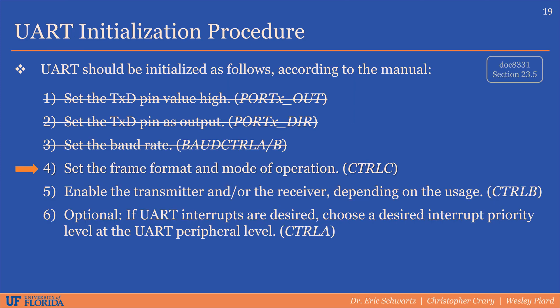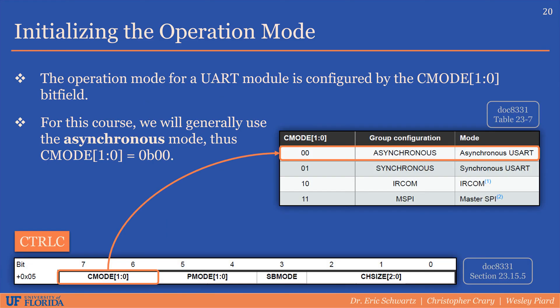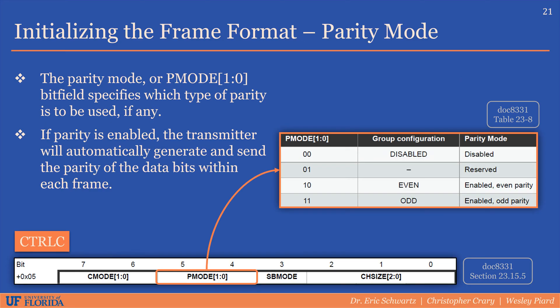The next thing we have to do is set the frame format and the mode of operation, both done using the control C register. The operation mode for a UART module is configured by the CMODE bitfield — for this course, we'll generally use the asynchronous mode, setting the bitfield to 0,0. Moving on to the frame format, this is where we initialize the number of data bits, the style of parity to be used if any, as well as the number of stop bits. The parity mode (p-mode) bitfield specifies which type of parity is used — if parity is enabled, the transmitter will automatically generate and send the parity of the data bits within each frame.